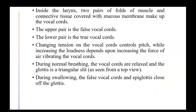Inside the larynx are two pairs of folds of muscles and connective tissue covered with mucous membranes, forming the vocal cords. The upper pair, the false vocal cords, do not produce sound. The lower pair, the true vocal cords, are the ones that create and make sound.